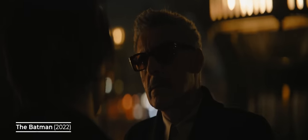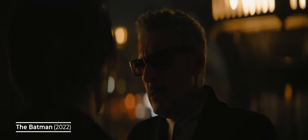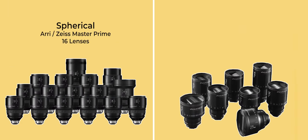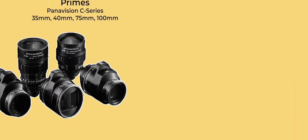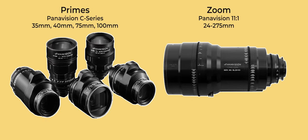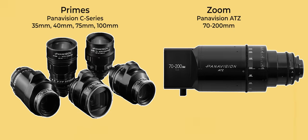Spherical primes also usually come with far more focal lengths to choose from. For example, a modern set of spherical primes like the Master Primes come in 16 focal lengths, whereas a modern set of anamorphic primes like the G Series come in 8 focal lengths. This sometimes means that cinematographers like to pair a set of anamorphic primes with a longer zoom — which may either be an anamorphised rear zoom or a front anamorphic zoom like the Panavision 70-200.